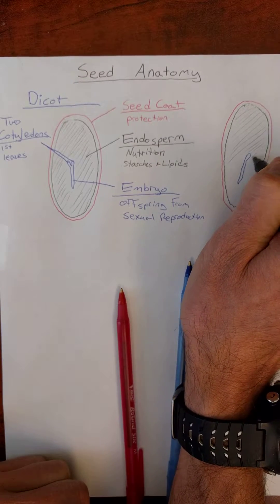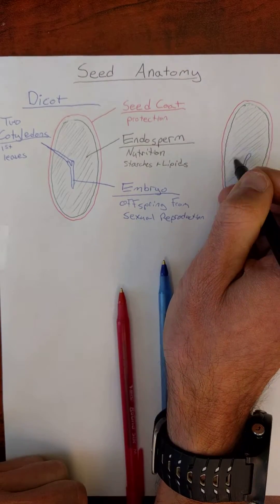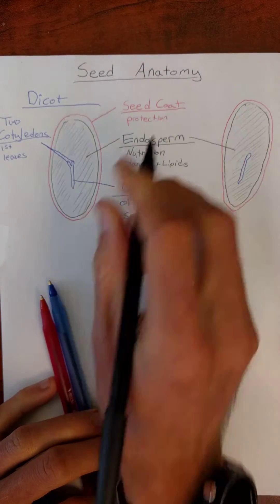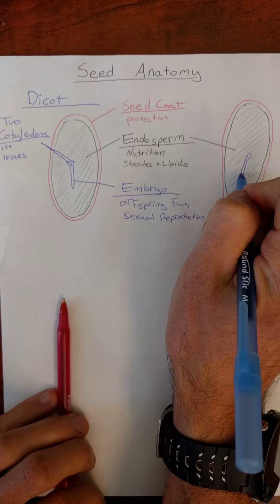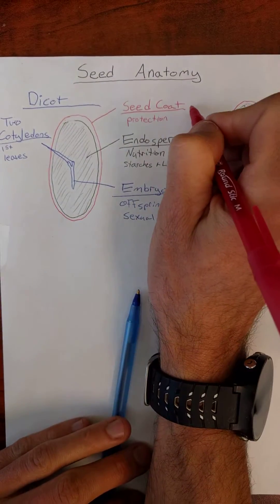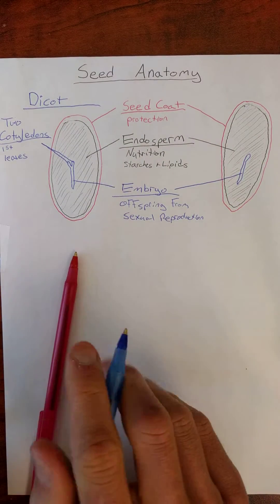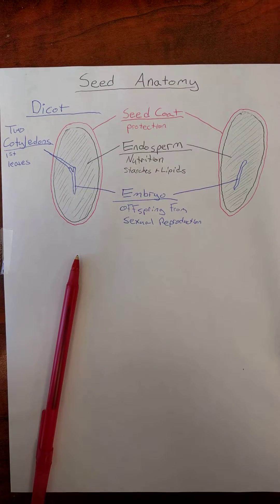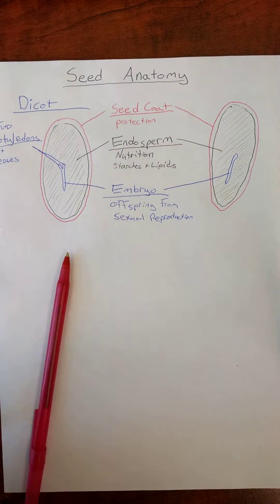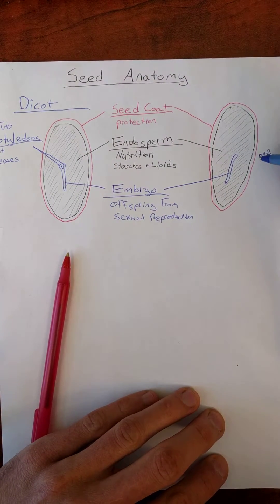That is the endosperm, the food source in the monocot. I'm going to draw my labels out. Endosperm is still represented by the black section. My blue is still going to be my embryo. The red is still going to be my seed coat. But this time, I've only got one cotyledon.